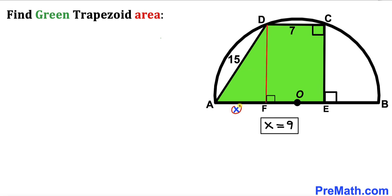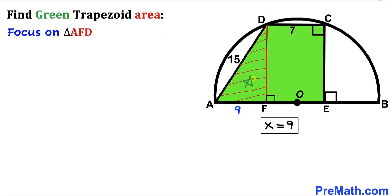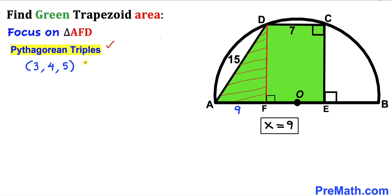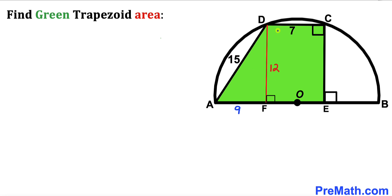So x equals 9 units, meaning segment AF equals 9. Focusing on right triangle AFD with sides 15 and 9, we recall the Pythagorean triplet 3-4-5 multiplied by 3, giving 9-12-15. Since we have 9 and 15, the third side is 12 units. Therefore the height of this trapezoid turns out to be 12.